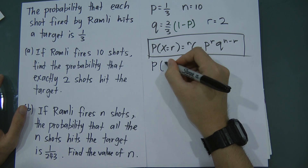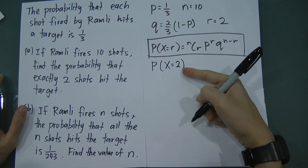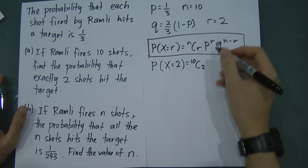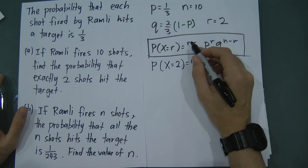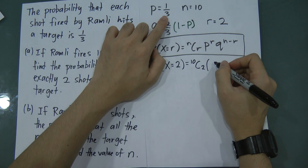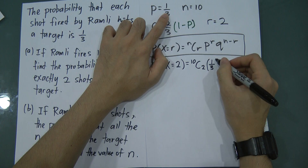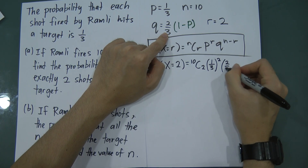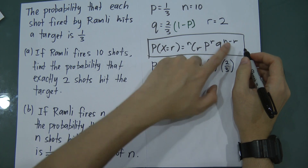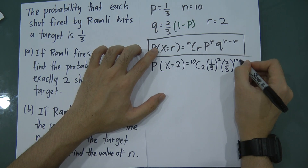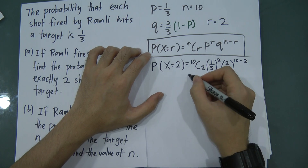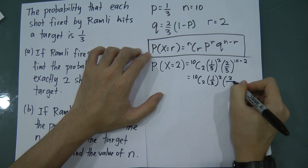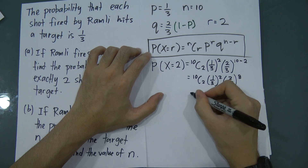To find the probability that Ramley hits exactly two targets: n = 10 (he fired 10 shots), r = 2 (he hits exactly 2). Substitute into the binomial formula P(X = r) = nCr × p^r × q^(n−r). So it becomes 10C2 × (1/3)^2 × (2/3)^(10−2), which is 10C2 × (1/3)^2 × (2/3)^8. You then just press the calculator.